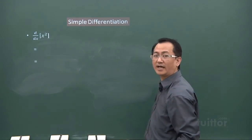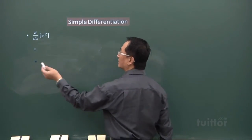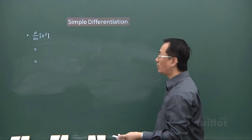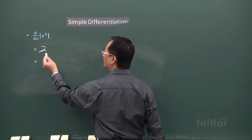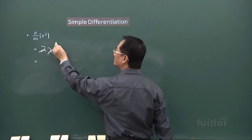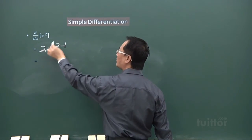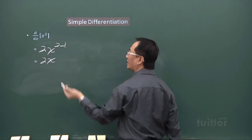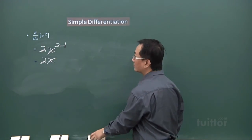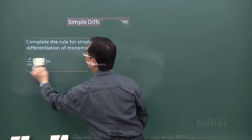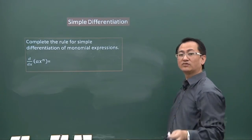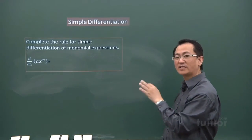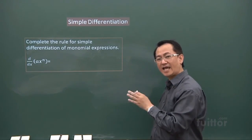In the next case, differentiate X squared. The index is 2 and the coefficient of X squared is 1. Take 2 multiplied by 1 — you get 2. Then reduce the index by 1: X to the power of 1. Simplifying, you get 2x to the power of 1, and we don't need to write the 1 — it can be invisible. So the derivative of X squared is 2x.